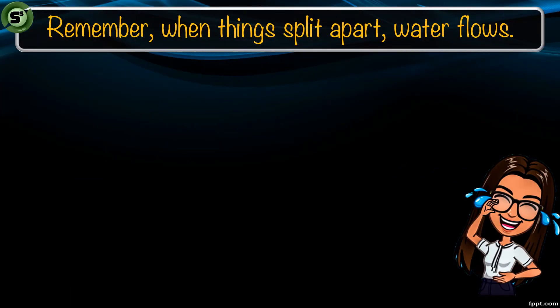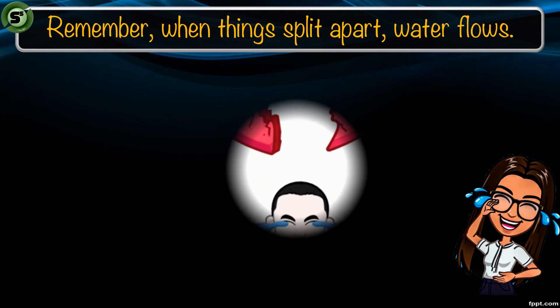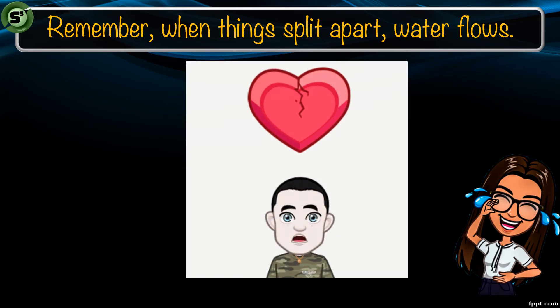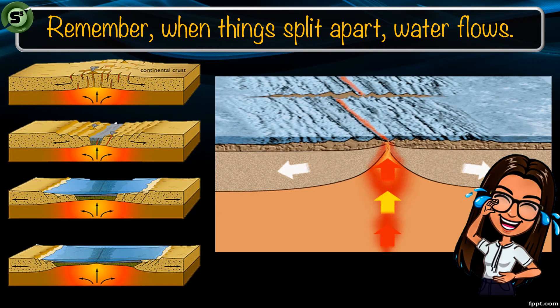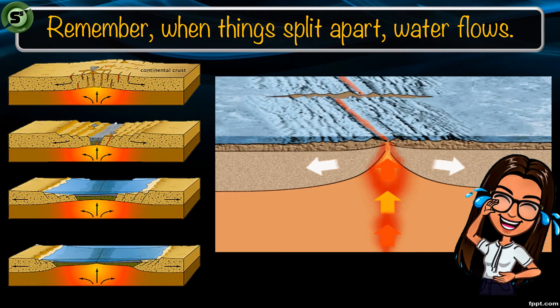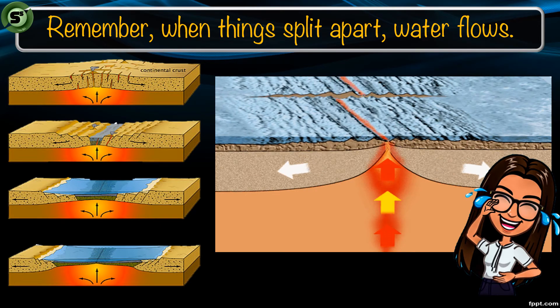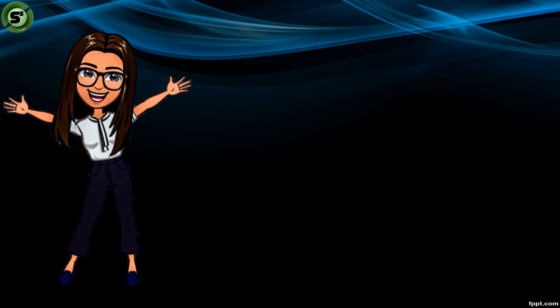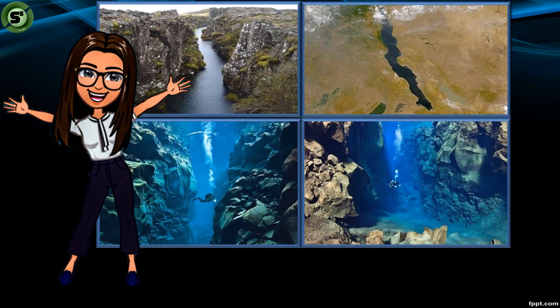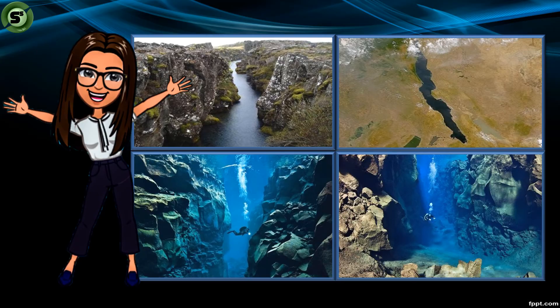When things split or break apart, water flows — kidding aside, the result of both types of divergence is the formation or lengthening of the ocean floor. Now that you already know the two types of divergent boundaries, you can explain how these earth features formed. I feel you are now ready to do our activity.